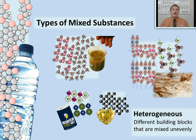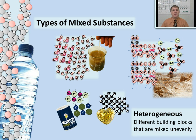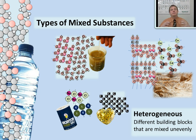Matter is mixed matter when you have more than one type of building block of matter in the same place. A heterogeneous mixture is mixed unevenly — different chunks of different substances in different areas, or a random arrangement of the different building blocks. A homogeneous mixture, or solution, occurs when the different building blocks spread evenly throughout one another in a pattern.